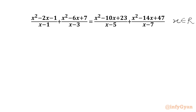Let's get started by writing here our denominators cannot be 0. So x cannot be 1, cannot be 3, cannot be 5, cannot be 7.